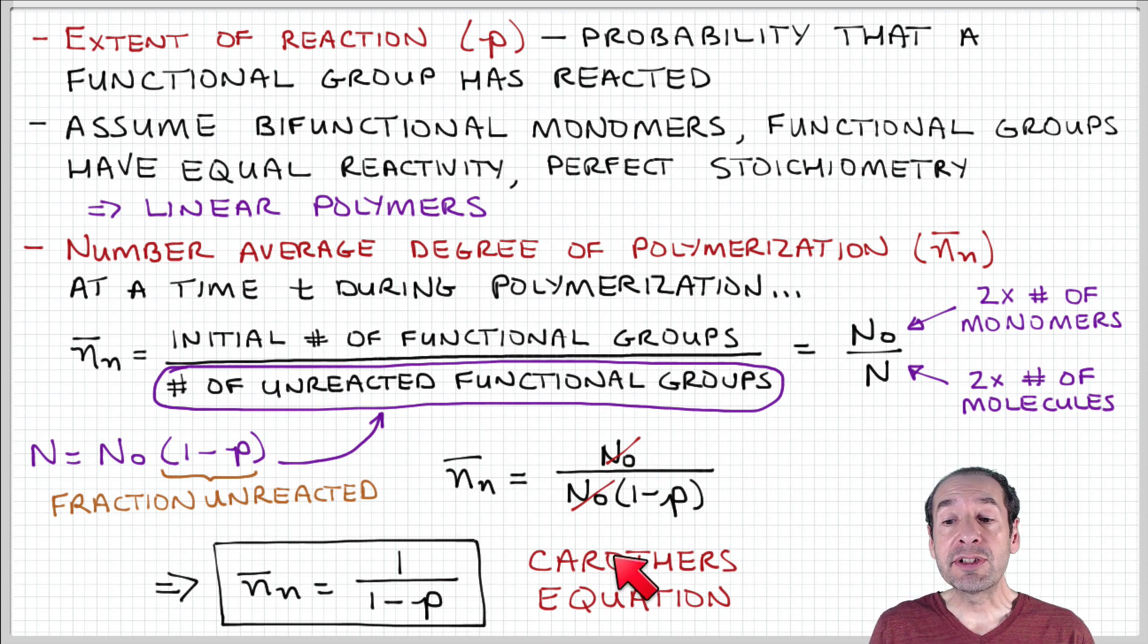This is a very important result. This is known as the Carothers equation, named after our friend Wallace Carothers, who you may remember played a key role in the discovery of nylon, and as part of that effort, also developed a lot of this understanding of condensation polymerization associated with that.